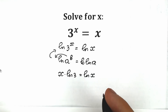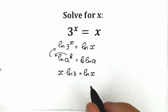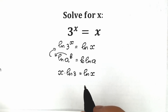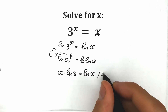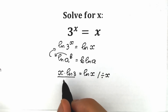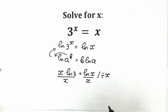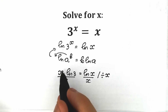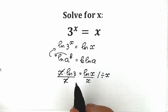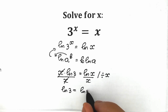Right now let's group our constant on the left side and our variables on the right side. For this, let's divide both sides by x. When we divide both sides by x, the x cancels on the right side, and we have natural log 3 equal to natural log x over x.